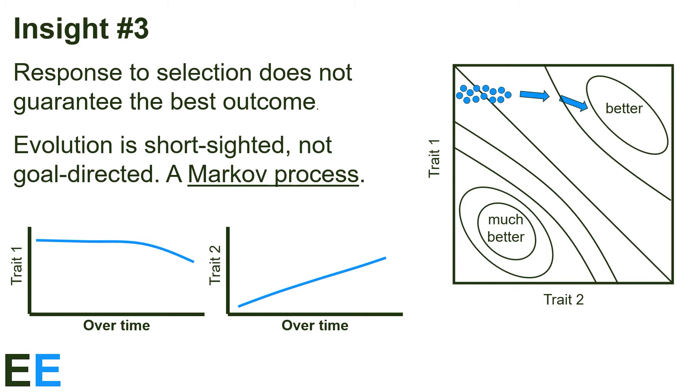Our third insight comes from the second. Response to selection does not guarantee the best outcome. In this fitness landscape, there are two peaks, with the one on the lower left representing the highest overall fitness. However, the population only experiences selection on the part of the surface where it is, and the same combination of variation and local selection as in the previous example would drive the population to the inferior fitness peak. At each step, the population is improving and the best individuals are thriving, but the final phenotype achieved is not the best one possible. Evolution has resulted in the population moving to a non-optimal state.